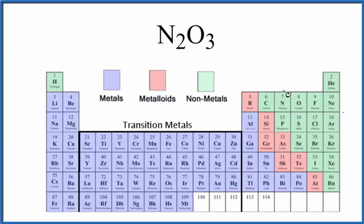So nitrogen, right here, and then oxygen, they're both nonmetals. When we have nonmetals bonded together, that's a covalent or also called molecular compound.